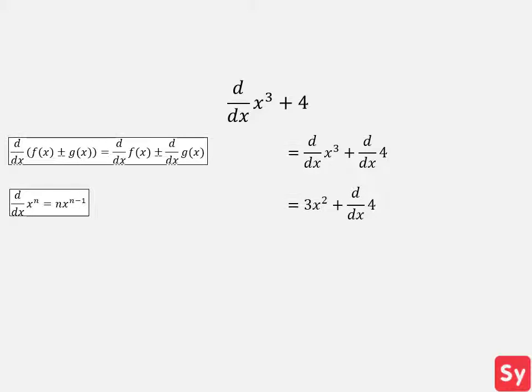Next we will solve the derivative of 4. Recall the constant rule: the derivative of any constant is 0. So this equals 3x squared plus 0, which simplifies to 3x squared, our answer.